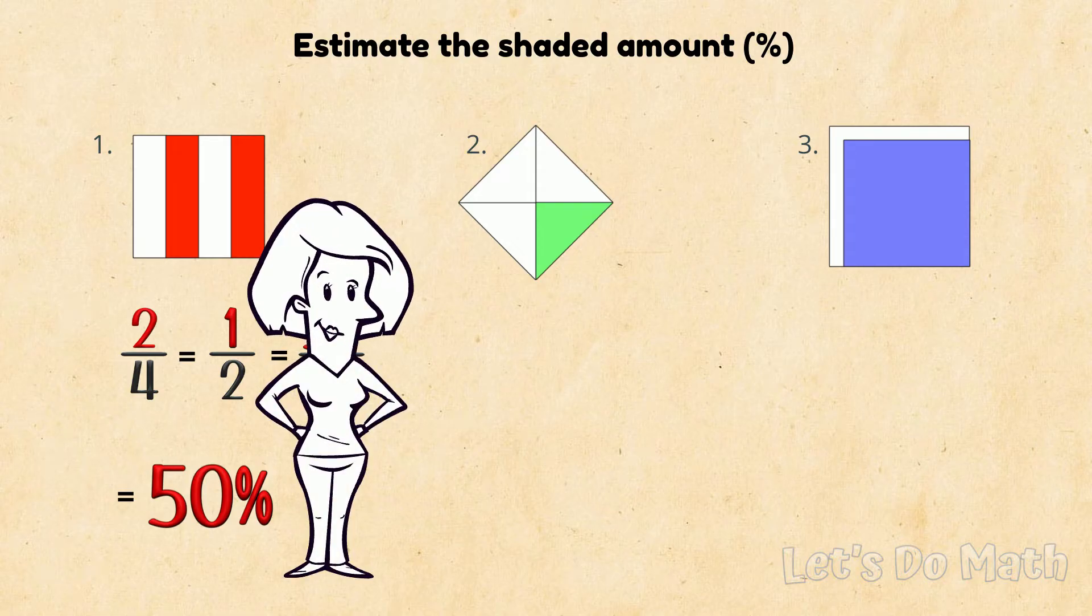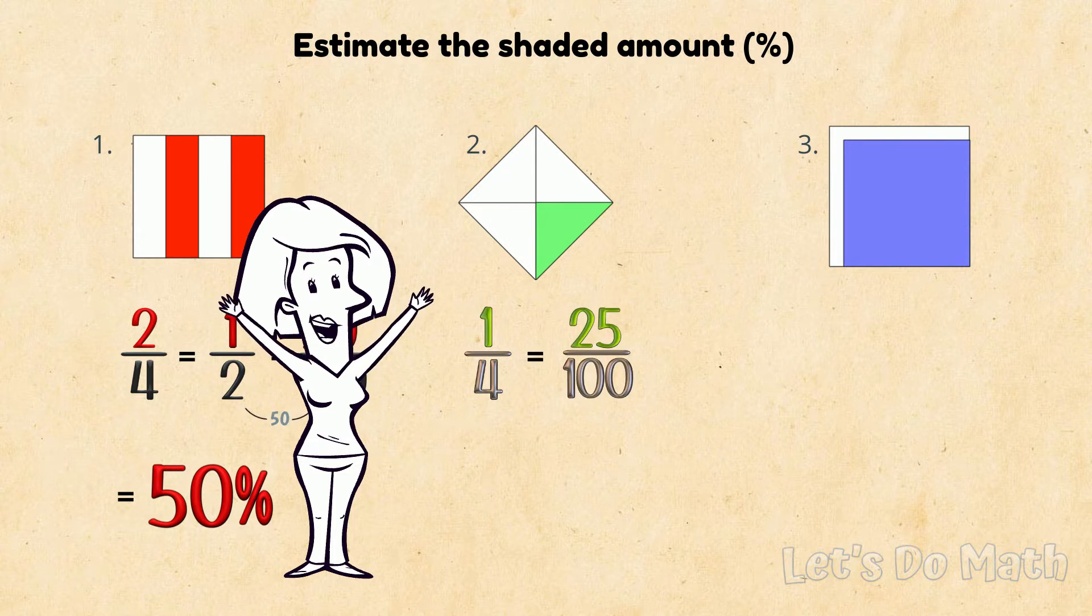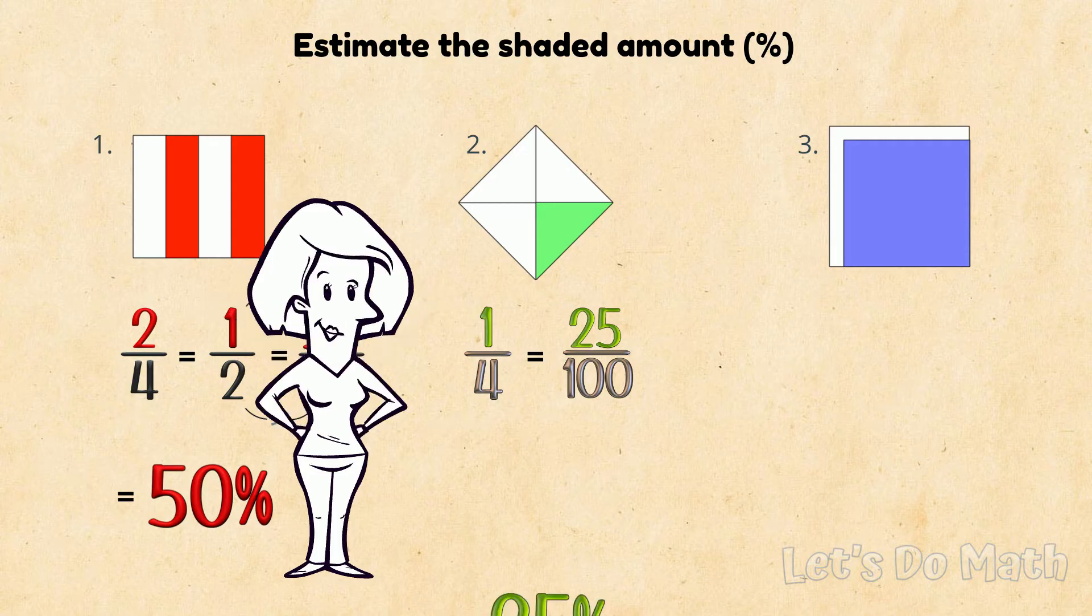In number 2, we've got 1 part out of 4 equal parts shaded. Think of your equivalents. 1 quarter is 25 over 100. That's 25%!